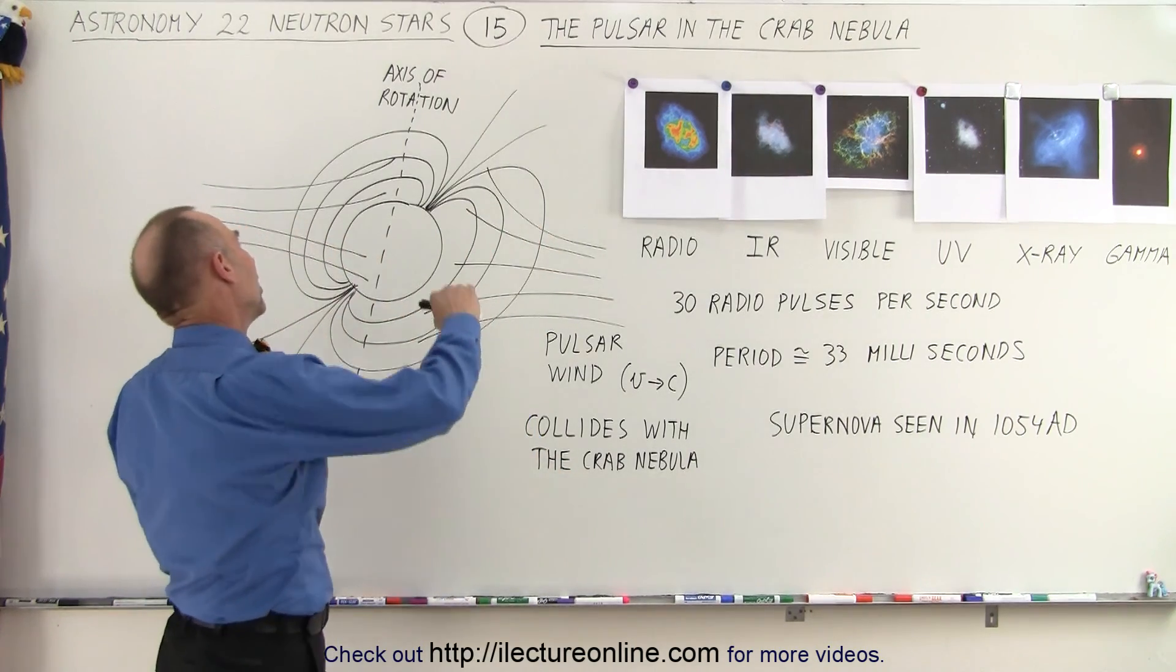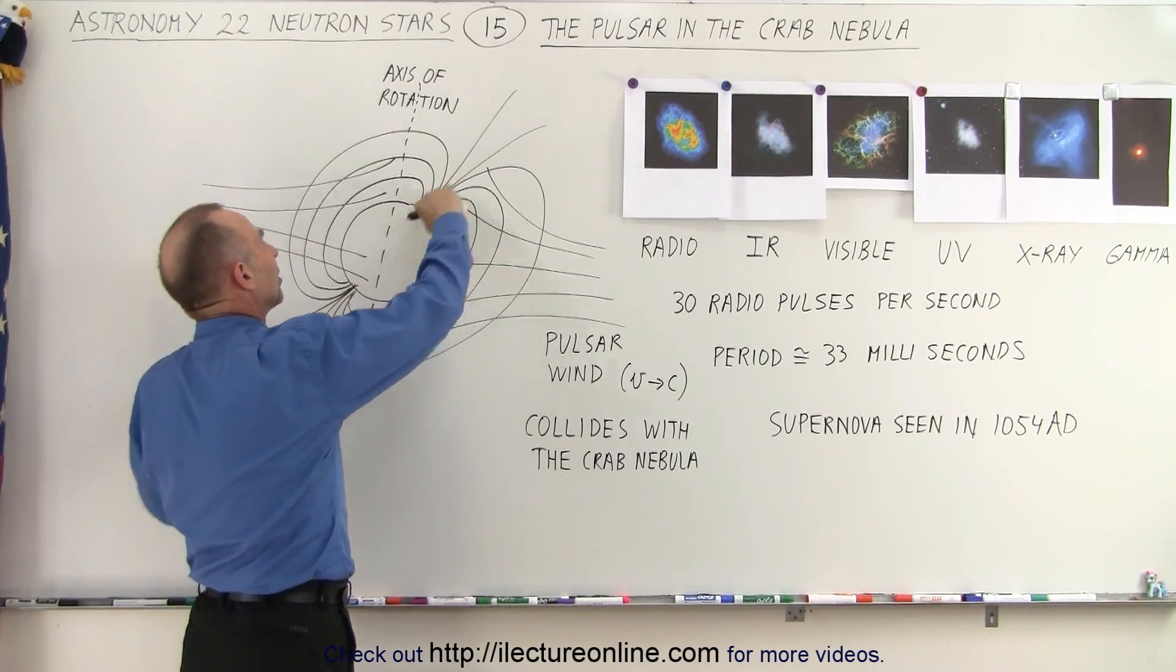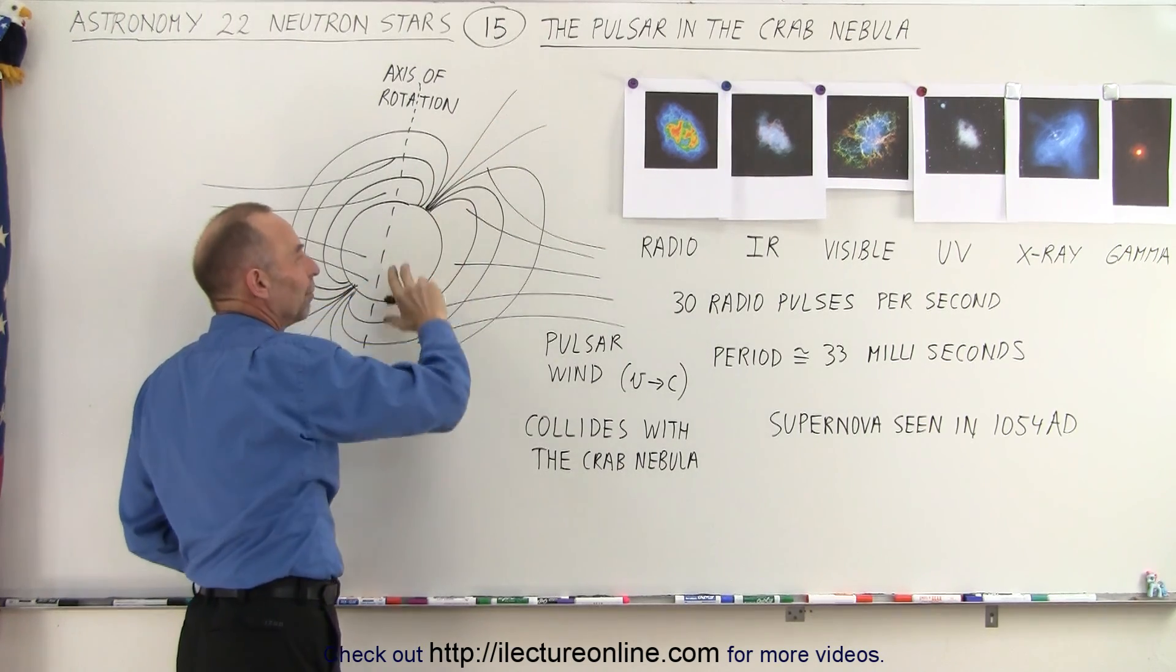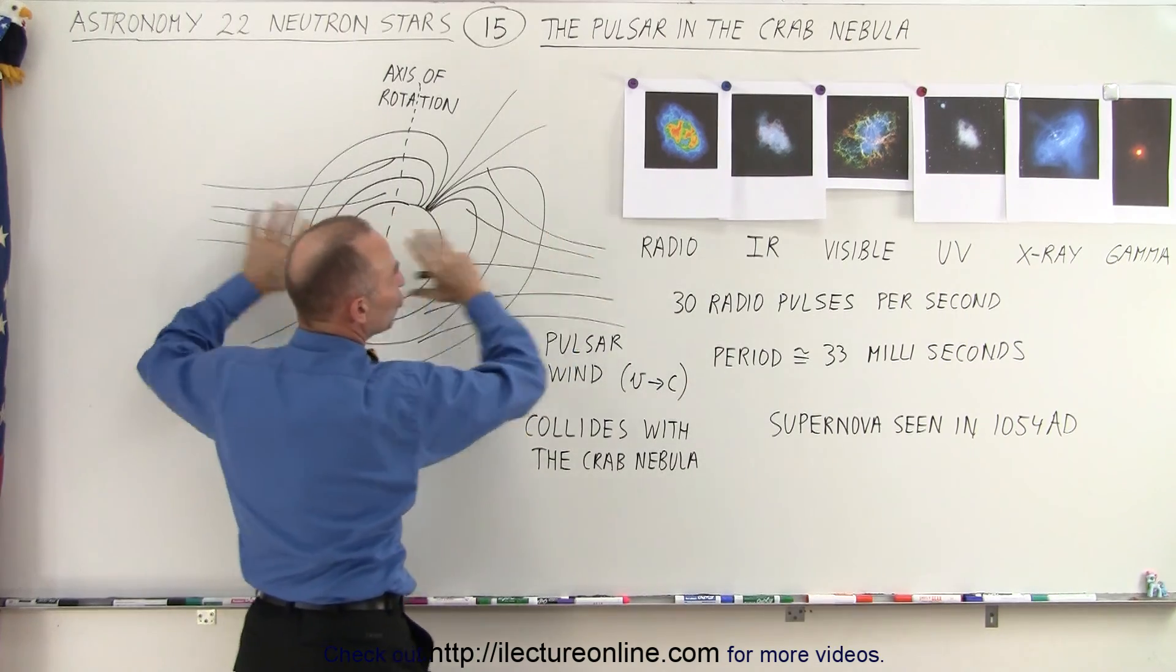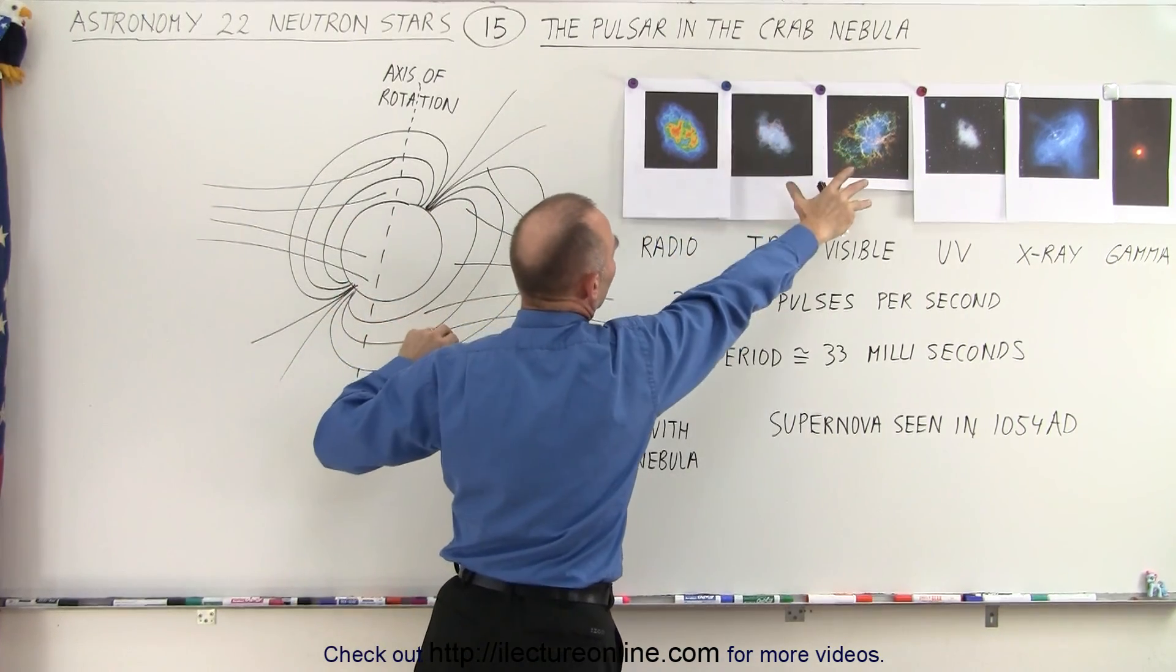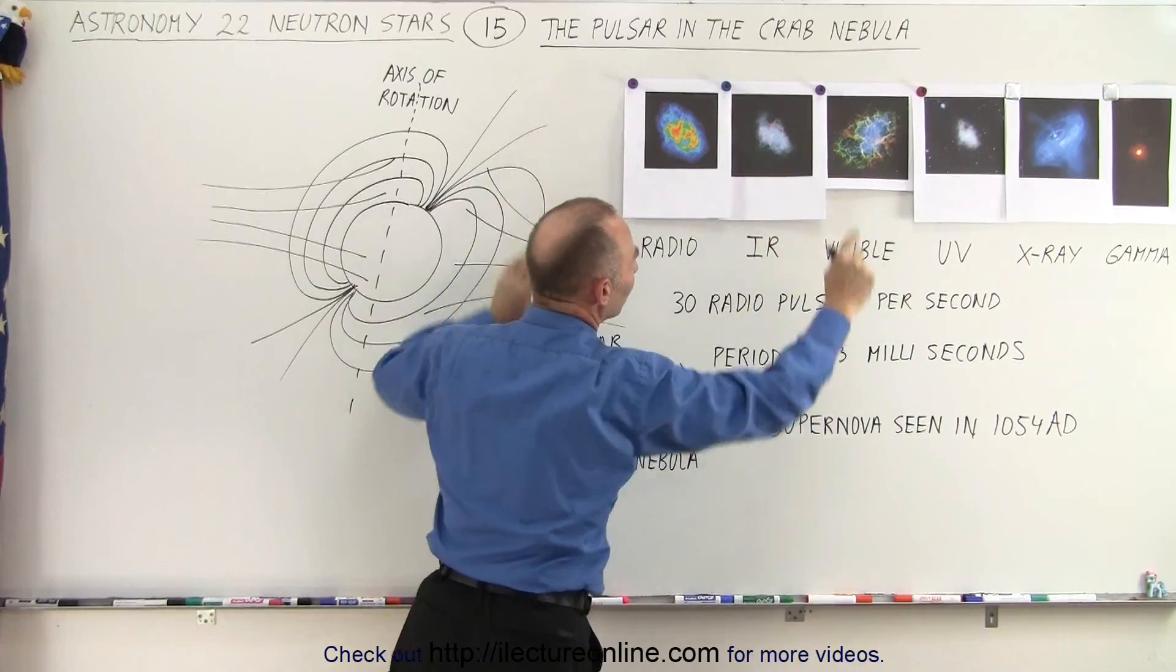So it's just not the radio radiation that we see along the lines of the side of the magnetic fields, but it's also the pulsar wind, kind of like the solar wind, that strikes all the various particles in the nebula that cause them to glow in all the various frequencies.